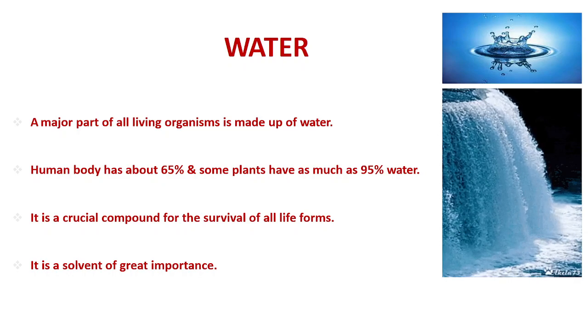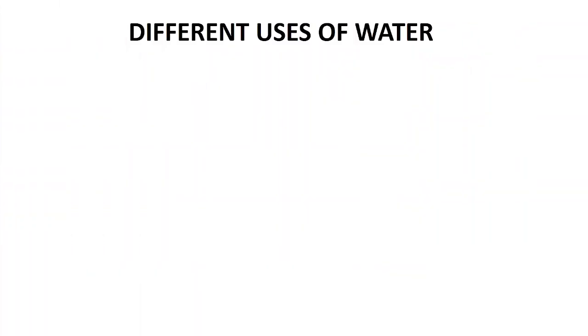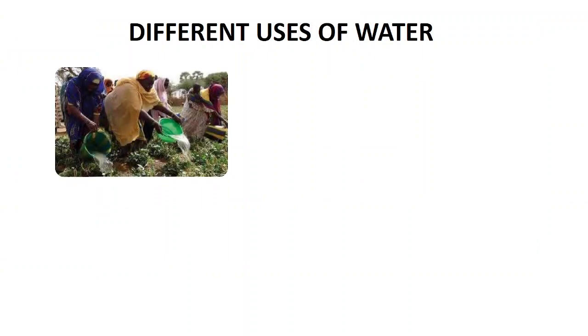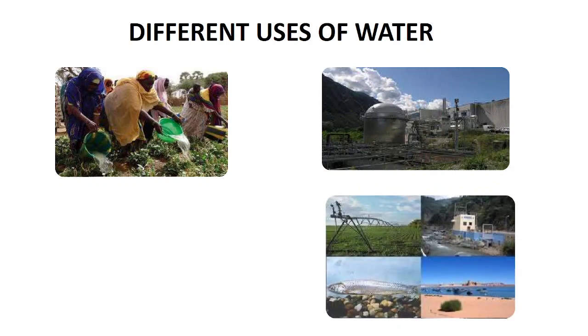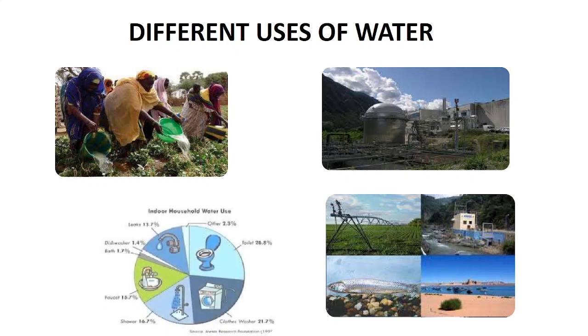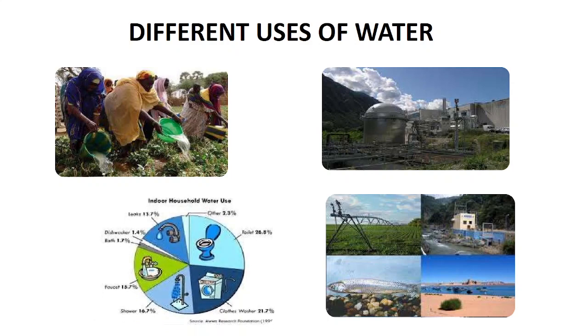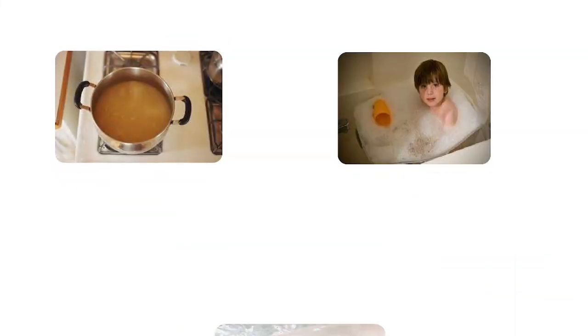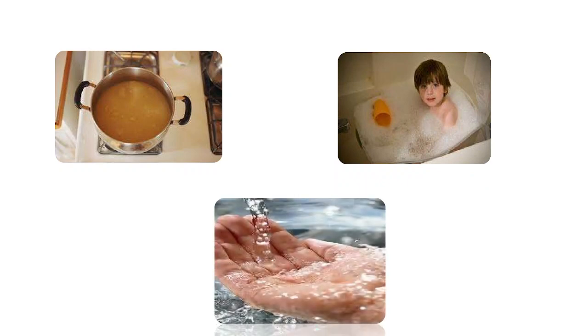We will look at the different forms and states of water and the reasons for those different states. But before that, let us see the different uses of water. Here is a pictorial representation: water is used in agriculture, in industries, for farming, with sea water and aquatic animals, and in day-to-day life for washing, cleaning, and drinking.